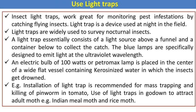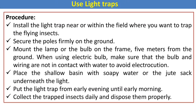The blue lamps are specifically designed to emit light at the ultraviolet wavelength. An electric bulb of 100 watts or a petromax lamp is placed in the center of white flat vessels containing kerosene water, in which the insects get trapped. For example, installation of a light trap is recommended for mass trapping and killing of the pinworm in tomato species, and also in godowns to attract adult moths for stored grain pests.